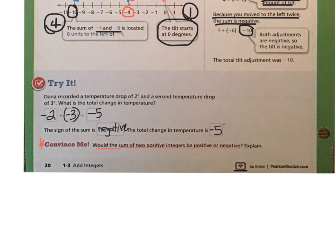The last thing on this page is the convince me. Would the sum of two positive integers be positive or negative? Explain. Well, remember two positive integers move to the right. And since they move to the right, the answer will be positive because the positive numbers are to the right of zero. You can think of this in another way. You've been adding positive numbers since first grade. And every time you've added numbers, you've gotten a positive answer. It wasn't until we introduced negative numbers that you got a negative answer like you did in example one.